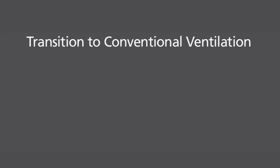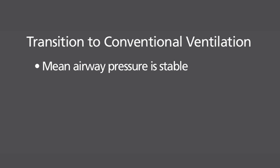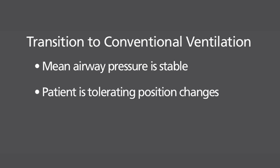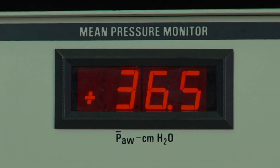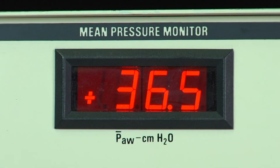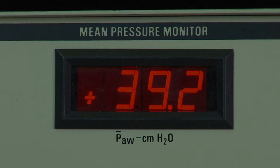The transition to conventional ventilation should be attempted only when each of the following parameters have been met: mean airway pressure has been stable for a period of time appropriate for the pathology, the patient is tolerating position changes and procedures well, and arterial blood gases are acceptable and stable. When transitioning to conventional ventilation, the mean airway pressure should remain at a similar level to the mean airway pressure used in HFOV.